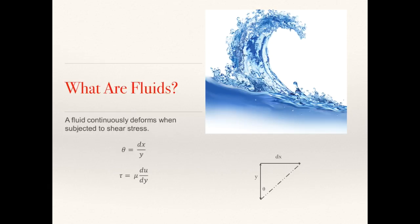Furthermore, the shear stress acting on a fluid can be calculated as: shear stress, represented by the Greek letter tau, is equal to the viscosity of the fluid, mu, multiplied by the shear rate — the velocity change in the x-direction with respect to the distance change in the y-direction.